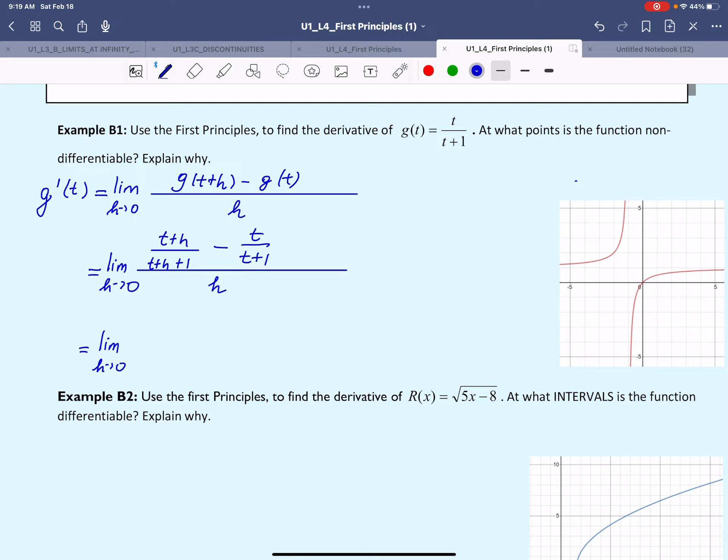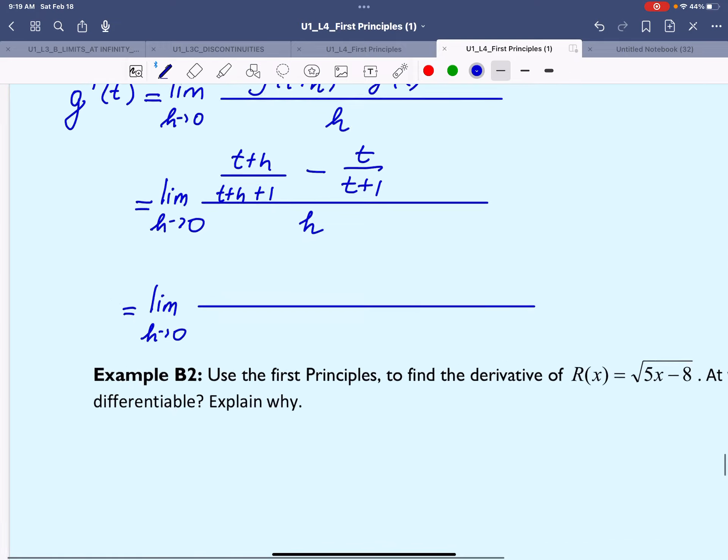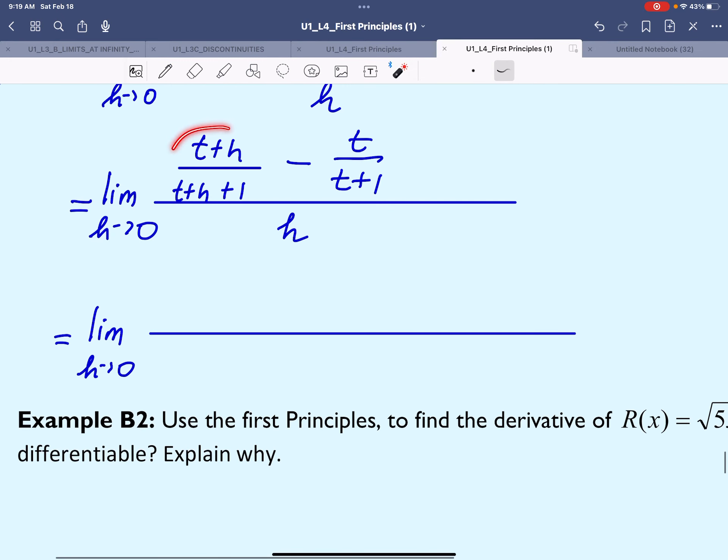As you can see, we need to first combine the two rational expressions that are in the numerator of this big fraction, which means we need to make the denominators the same first.